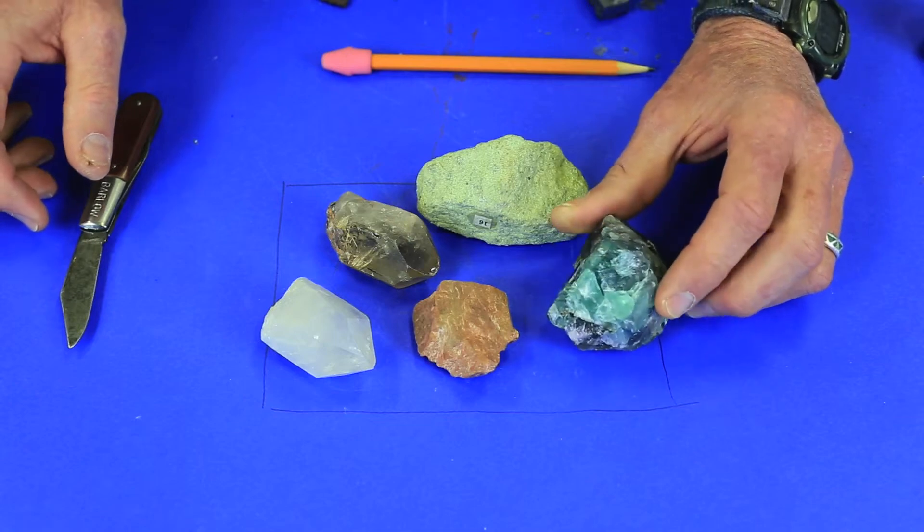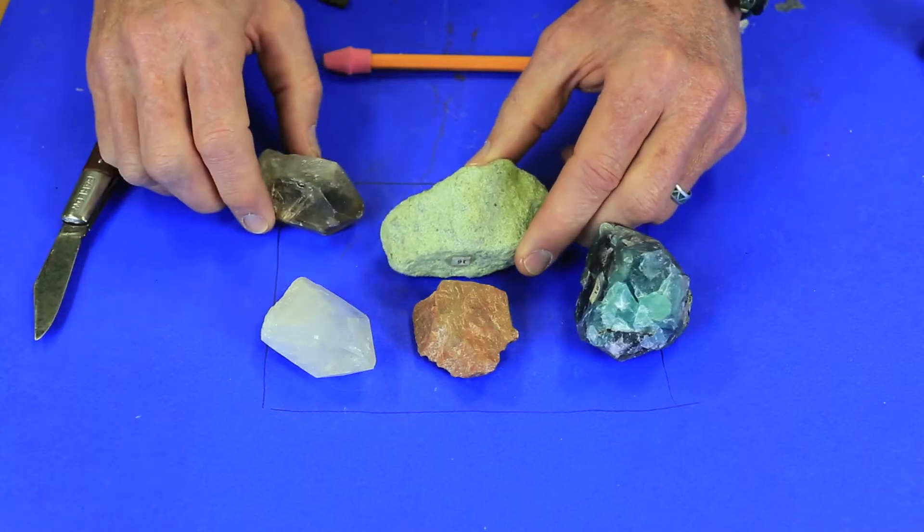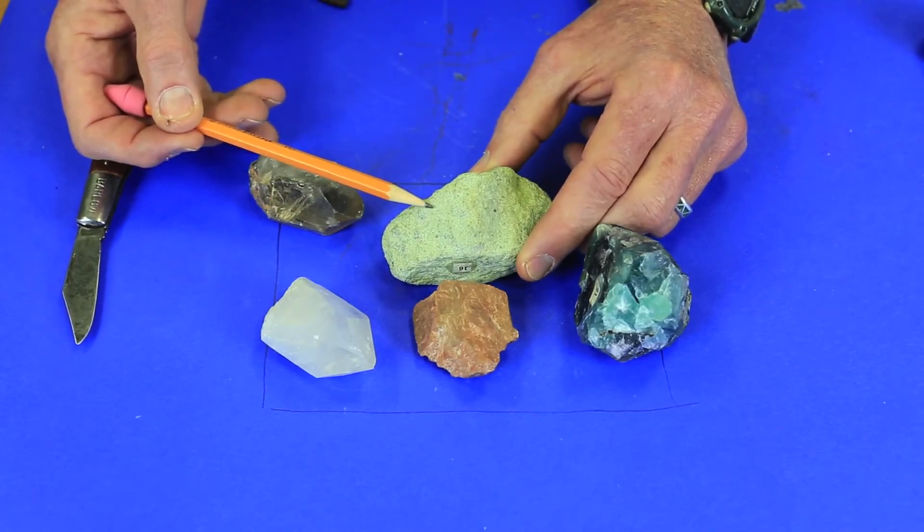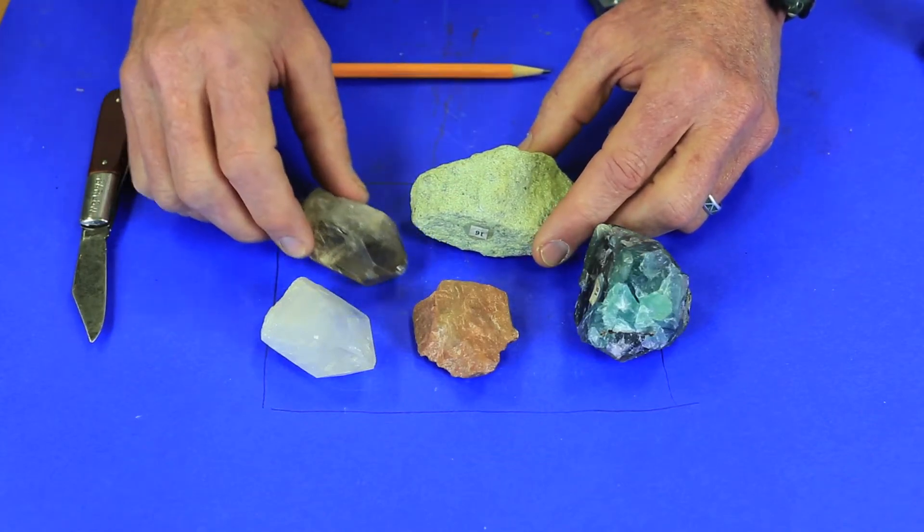Now there are a couple of exceptions to that. In your lab manual notes that olivine in particular is one whose color can be relied on, but for the most part don't rely on color—rely on these other properties that we are about to take a look at.